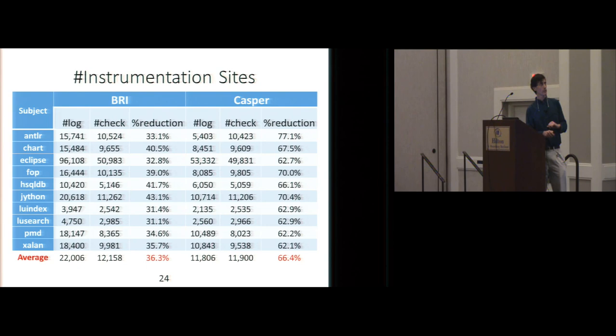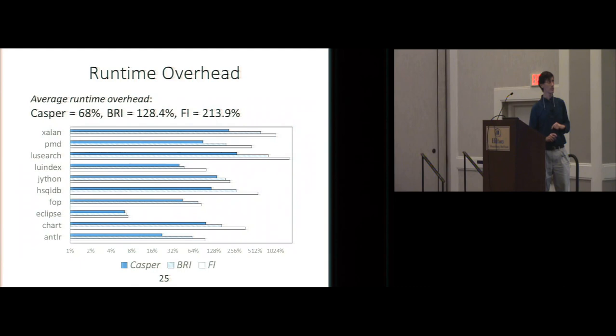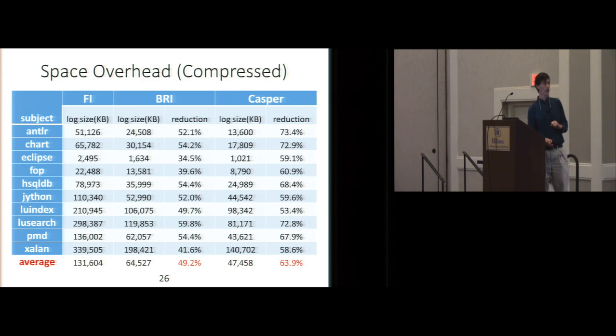And what they evaluated was their algorithm, the brute force one, and then one that just instruments branch points in the compressed control flow graph. So that's what they call BRI. And their evaluation metrics are the number of instrumentation sites, the run time overhead, and the space. So here is their method, and you can see they're winning. So this is with respect to the brute force method. They're getting a 66% reduction in the number of instrumentation sites, so that's pretty substantial. In terms of run time overhead, the naive method is over 200% overhead. If you instrument just the branch sites in the compressed call graph, you're down to 128%, and their overhead is 68%. Okay, it doesn't look so dramatic here because this is a log scale across the bottom. Okay, and in terms of space overhead, they're getting 64% compression.